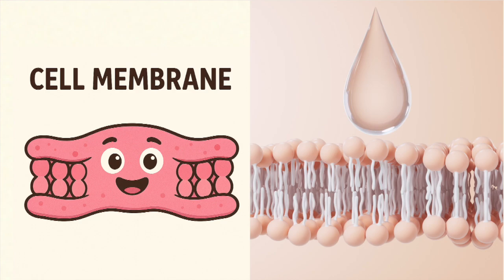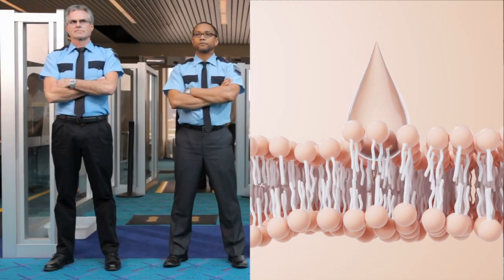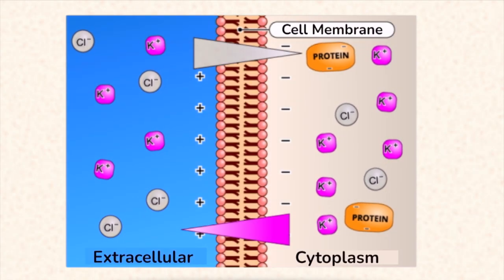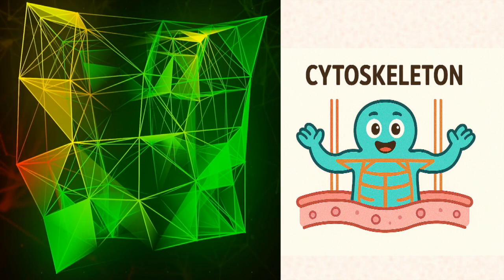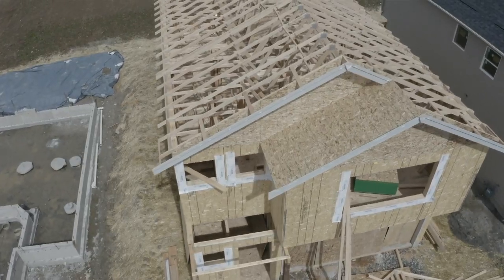Now the cytoplasm keeps all the organelles afloat. Jelly-like cushion in a cellular boat. The cell membrane to guard it has to pick and choose. Blocking haters, but it lets the nutrients through. A cytoskeleton is strong, gives the cell its frame.